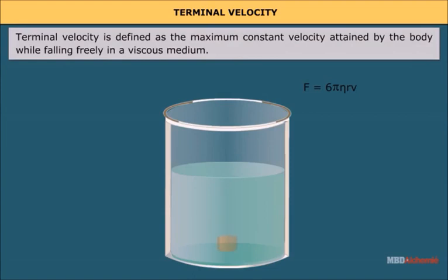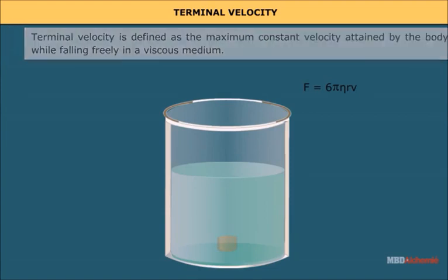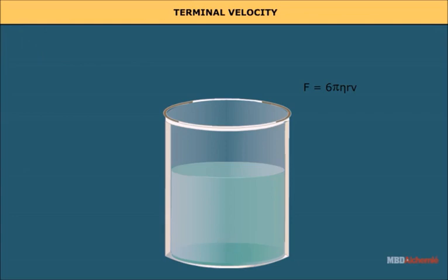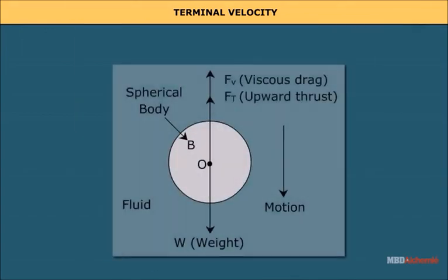Terminal velocity is defined as the maximum constant velocity attained by a body while falling freely in a viscous medium. In the case of raindrops, the viscous medium in which they fall freely is the air present in the atmosphere. A small spherical body falling freely through a viscous medium starts moving fast initially due to gravity, but after some time it attains a constant velocity known as terminal velocity.